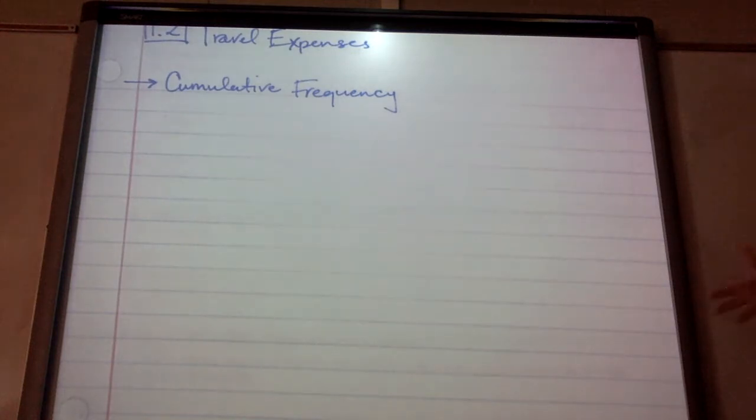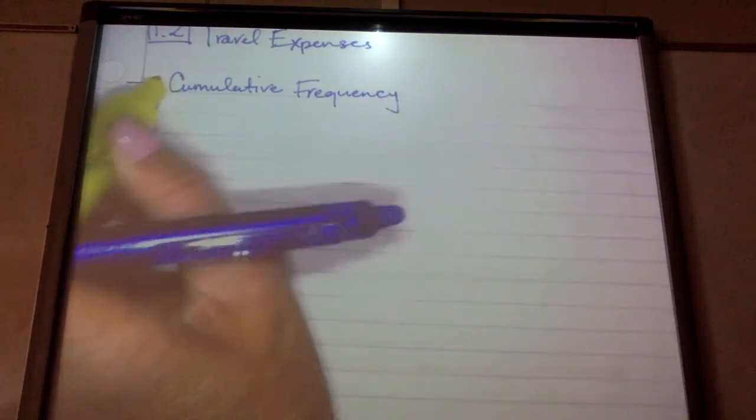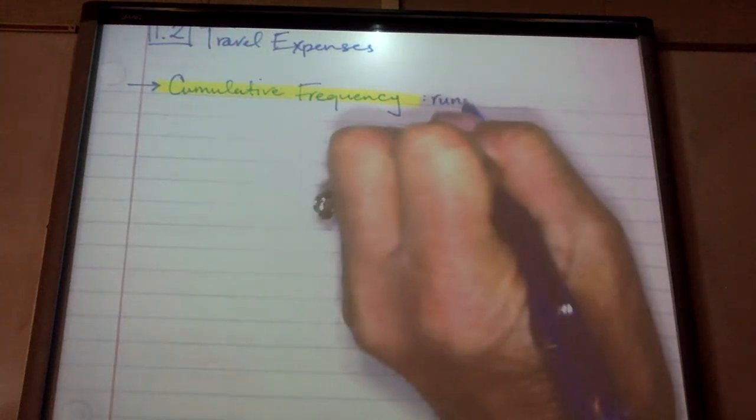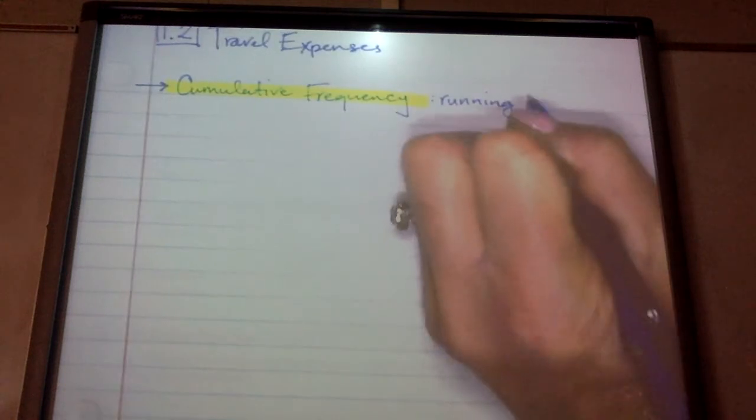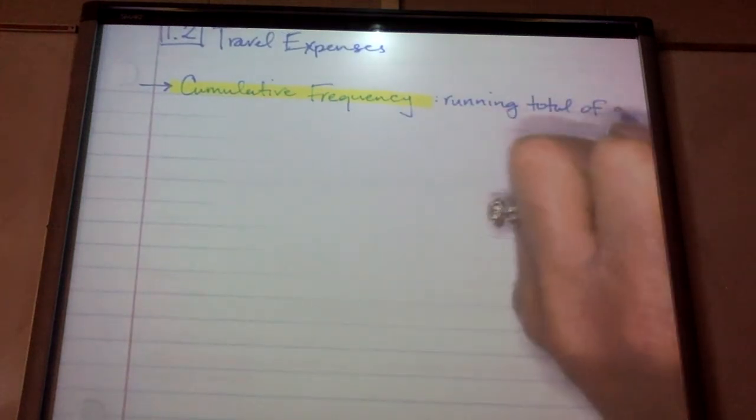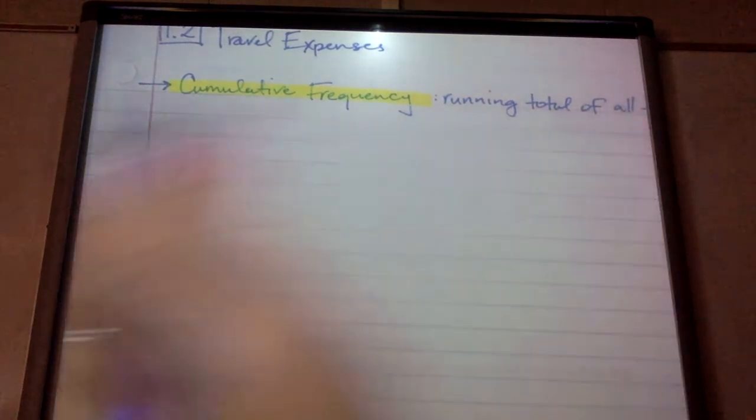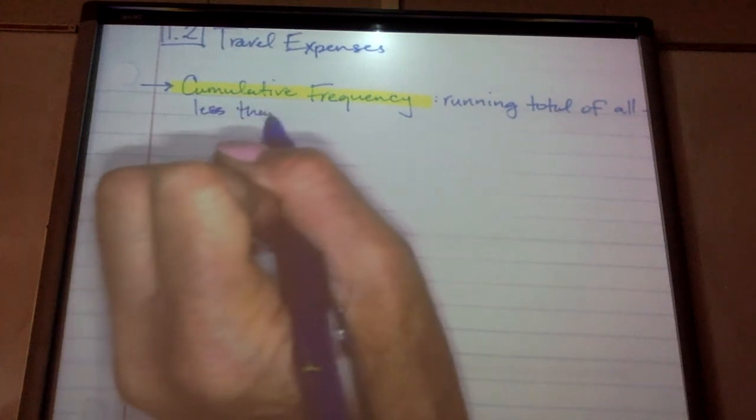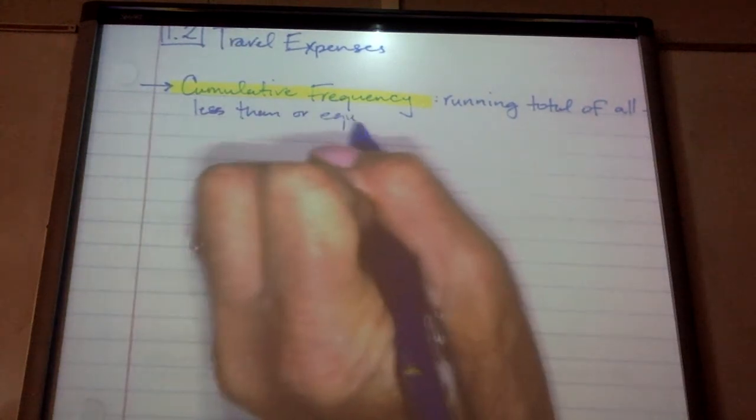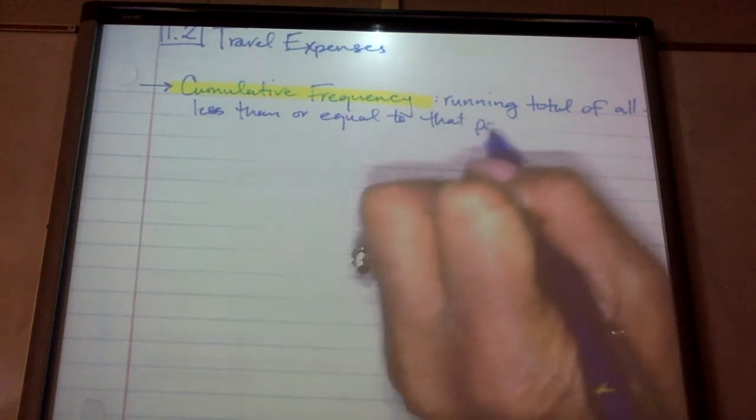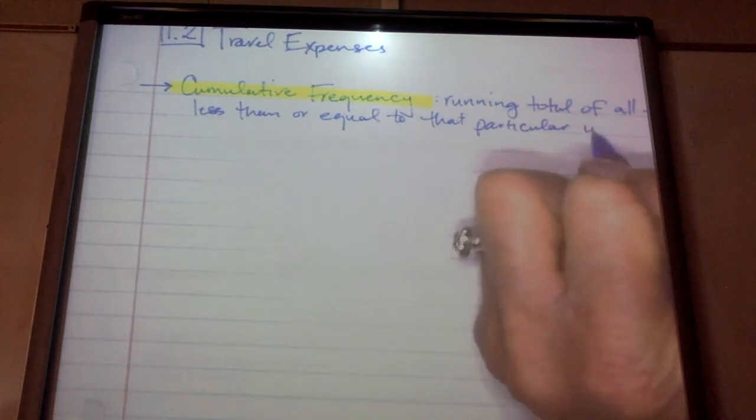So I'm going to go over those terms with you and then do a couple examples. Again, you can pause, fast forward, whatever helps you. So we're going to start with one of the terms in this section. It's called cumulative frequency, and this is basically a running total of all frequencies less than or equal to that particular interval.